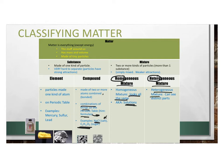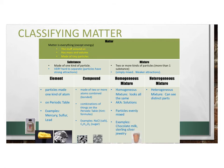In a heterogeneous mixture, you can see the distinct parts at the human level. At the microscopic level you can see the different kinds of particles, and at the human scale you can still tell there's that kind of particle and a group of those kinds of particles. In a homogeneous mixture, the particles are evenly mixed, so at the human scale we can't tell the difference. Examples include chocolate milk or sterling silver jewelry, which is silver and other metals mixed in.